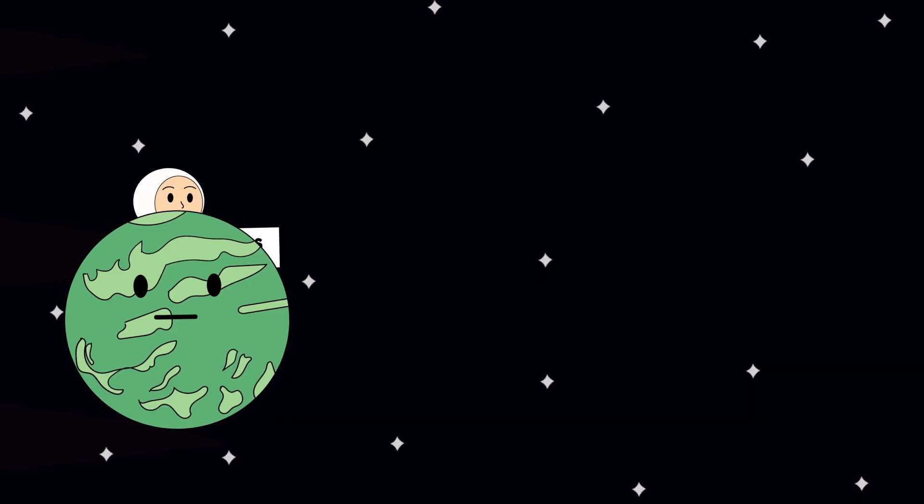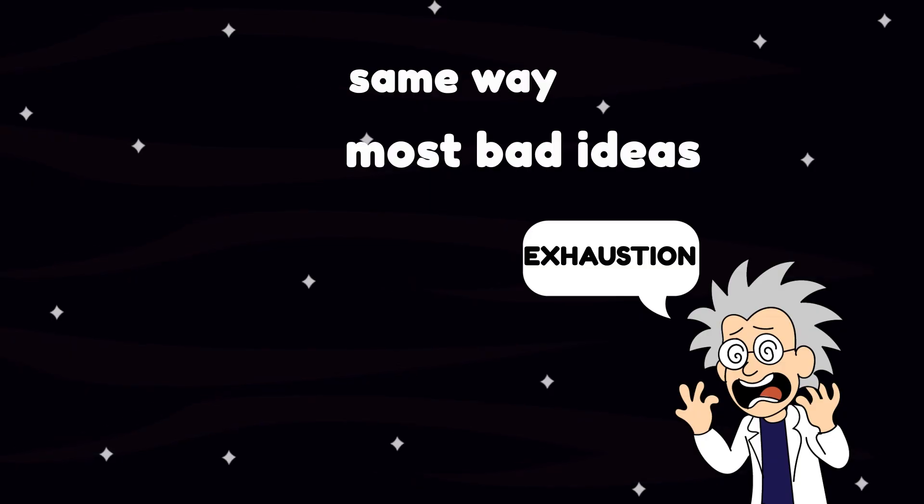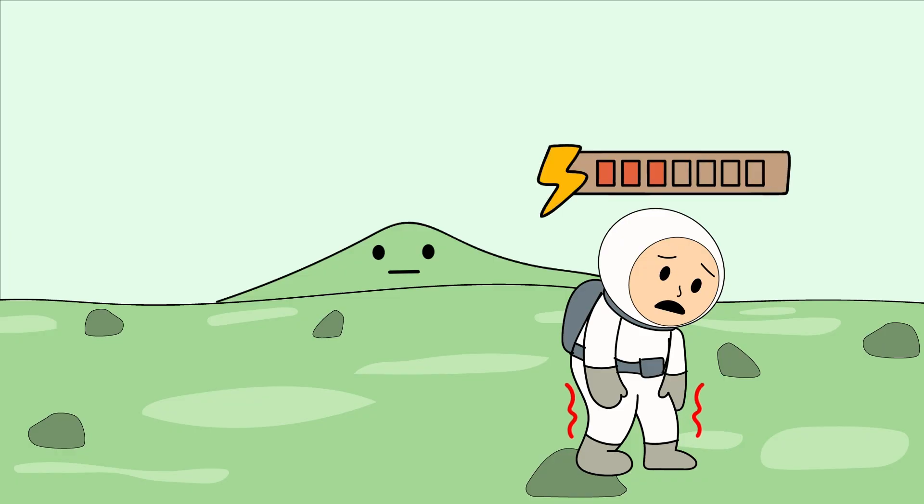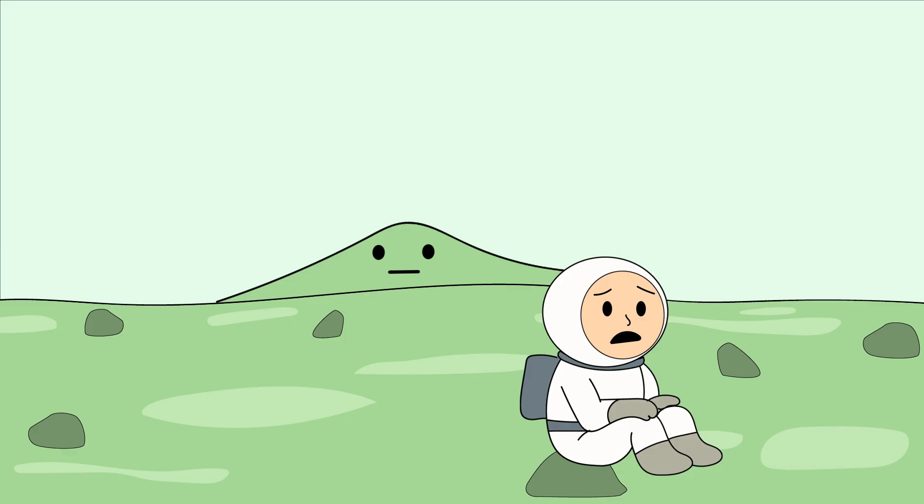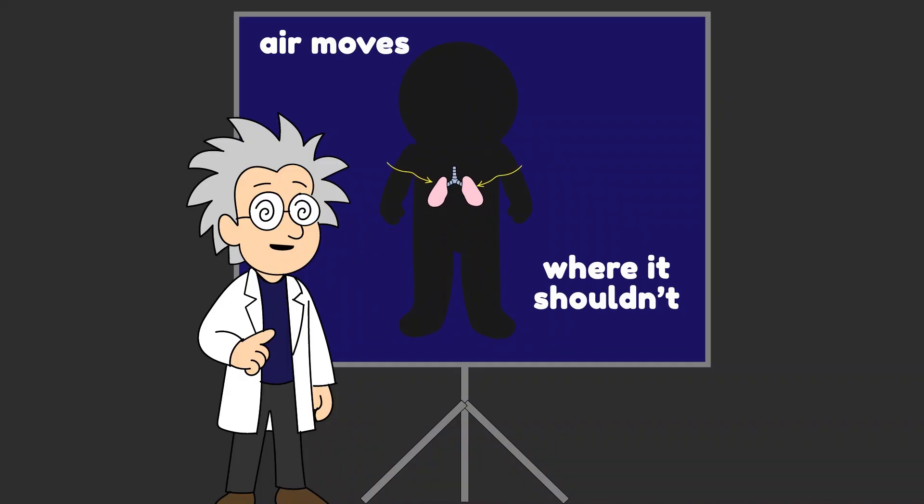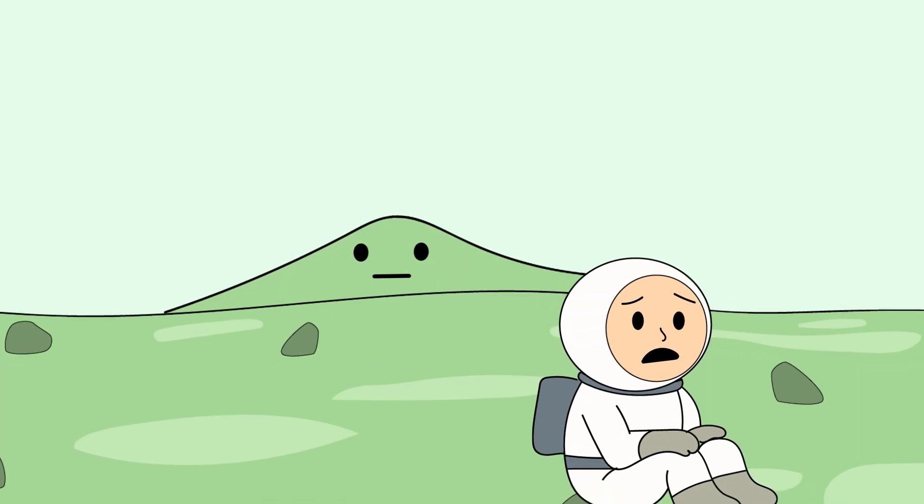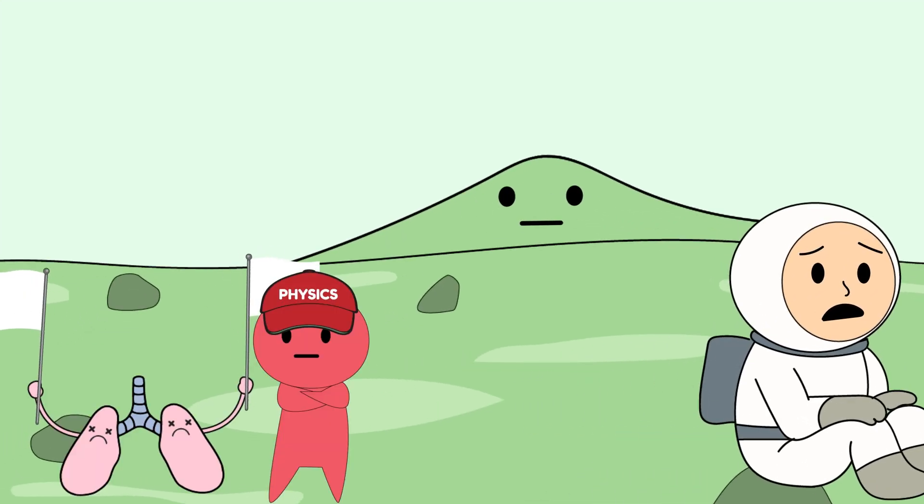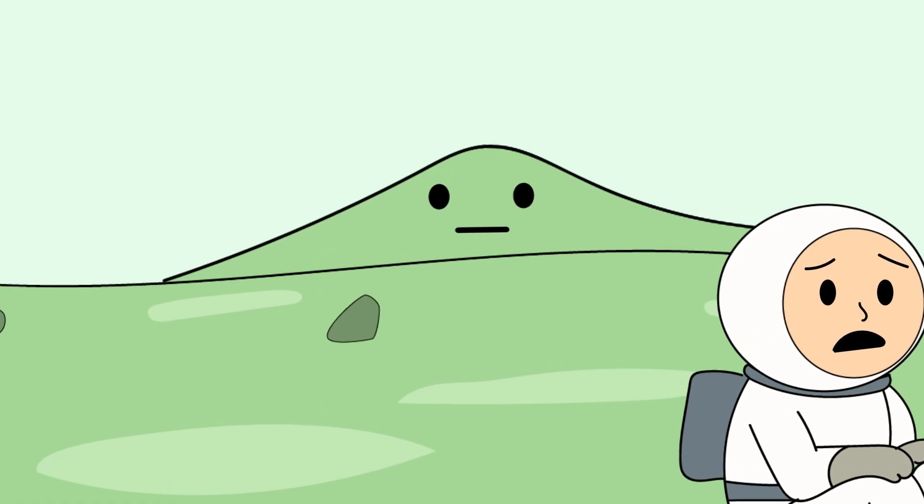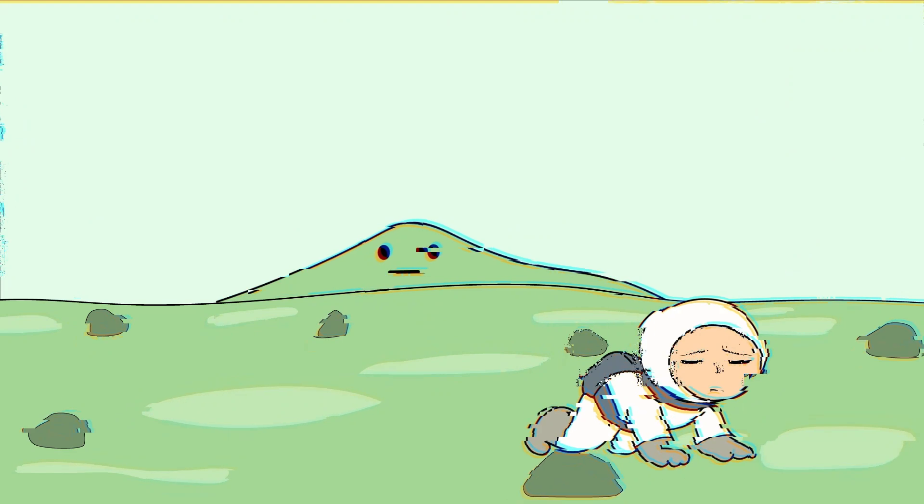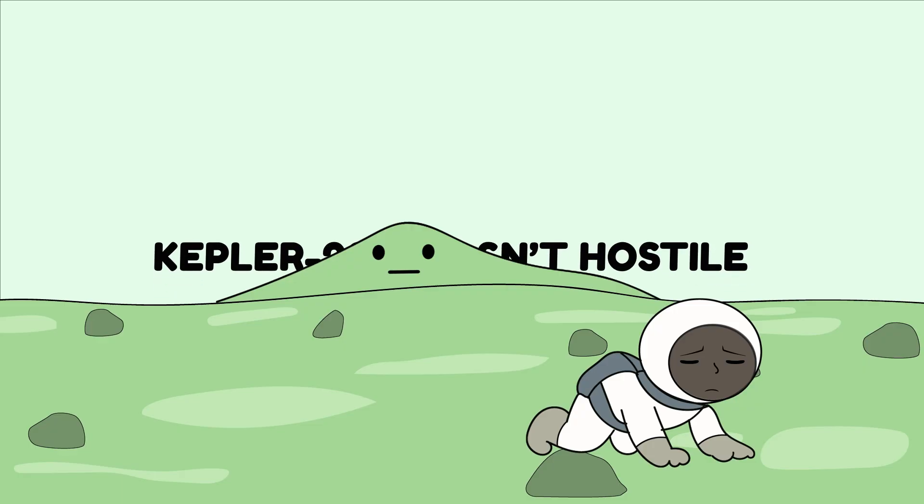The tour ends the same way most bad ideas do: with exhaustion. Gravity has been quietly draining you since the moment you arrived, and eventually, your body makes a decision before your brain can object. You sit down, just for a moment, just to rest, just to breathe. That's when the pressure shift hits. Your lungs compress, air moves where it shouldn't, and one internal system after another begins failing as your body realizes it made a catastrophic assumption about alien atmospheres. There's no dramatic explosion, no final scream, just biology losing an argument with physics. Kepler-22b never attacks you. It simply lets you exist long enough to think you're safe, and then reminds you why you aren't.